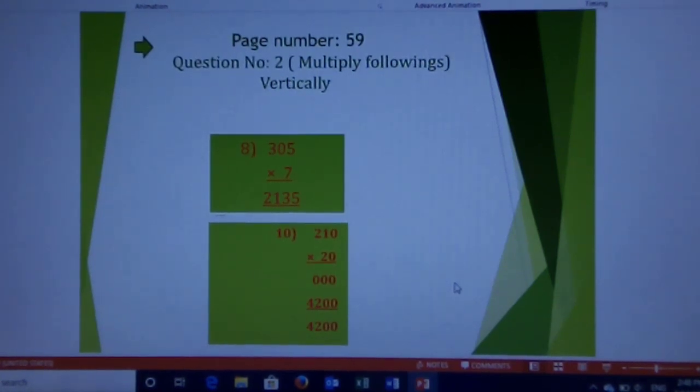Question number 2: Multiply following populations vertically. Question number 8. Here, 305 multiply 7. 7 multiply 5 = 35. 5 in the ones place and carry 3. 0 multiply 7 is 0 and 0 plus carry 3 = 3. 3 in the tens place. Now 3 multiply 7 = 21. 1 in the hundreds place and 2 in the thousands place.